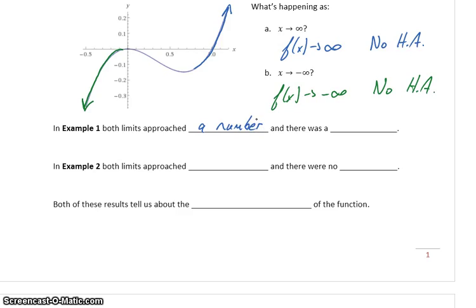Specifically in that case it was 1, but it could be any other number. When that approached a number, we had a horizontal asymptote.